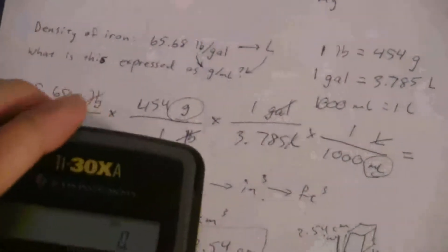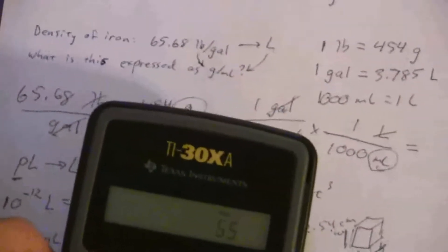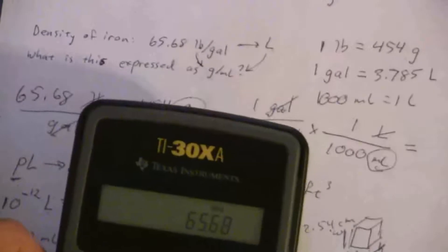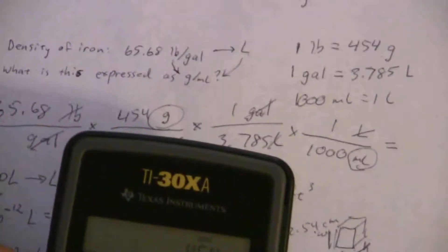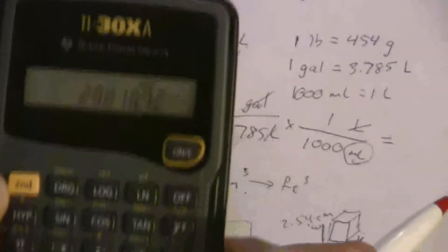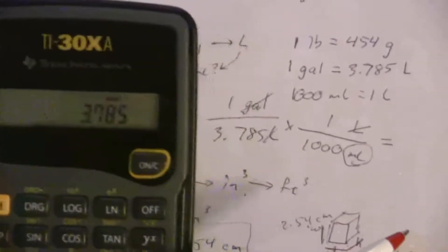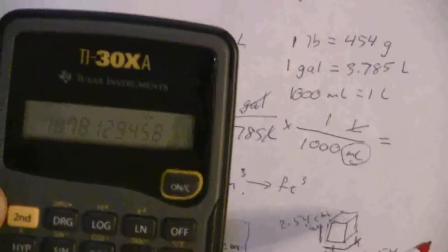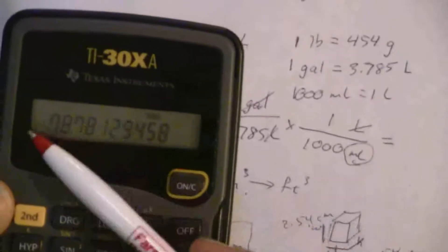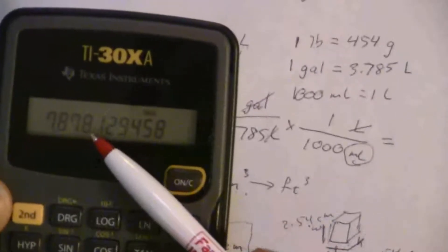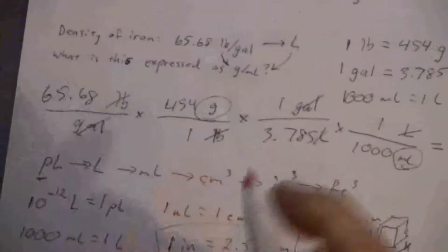So let's just go ahead and plug this into our calculator. We have 65.68 times 454 divided by 3.785 and then divide it again by a thousand. And we end up with 7.878 and we will limit this to three significant figures.